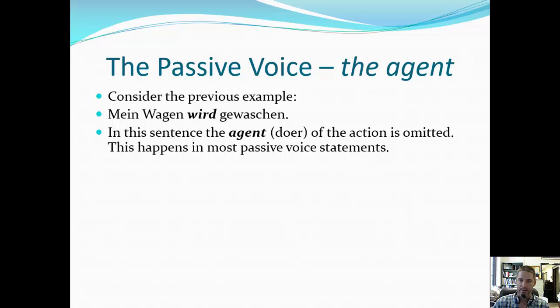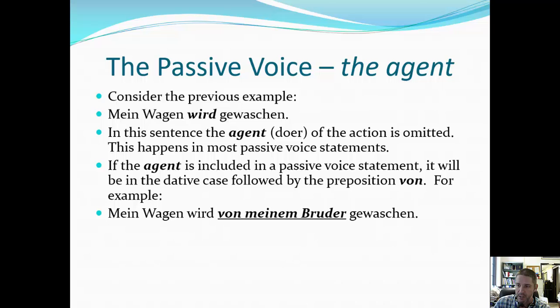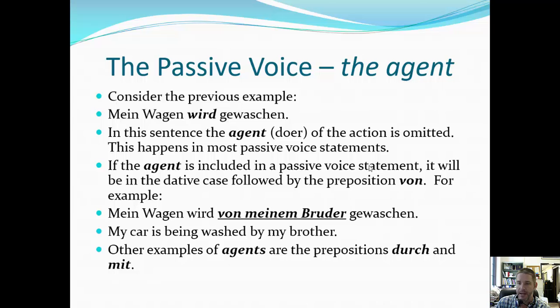Now let's look at one more component — the agent. 'Mein Wagen wird gewaschen' doesn't say who is washing the car — or by whom. But we can create a scenario where that happens. We use the dative preposition 'von.' For instance, 'mein Wagen wird von meinem Bruder gewaschen' — 'my car is being washed by my brother.' The word order stays the same: 'mein Wagen' begins, 'wird' is verb one in the second position, and 'gewaschen' is placed at the end. We just insert the prepositional phrase 'von meinem Bruder.'